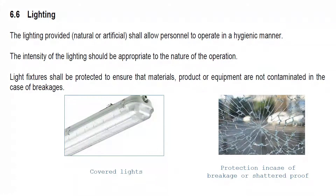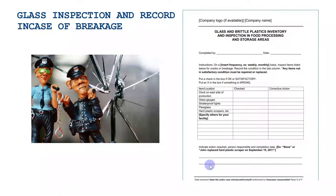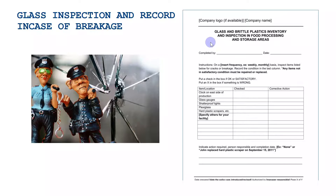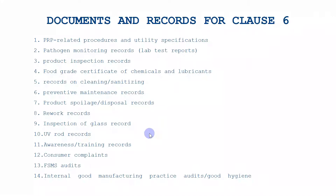The last sub-clause is 6.6, lighting. For this, use covered lights in the premises and shatterproof glass. You also need to make an inspection sheet of all brittle materials and glasses in your premises. Inspection reports are required at a set frequency, and in case any damage is observed, you need to make a corrective action against it. You can use the provided format for your company as well.